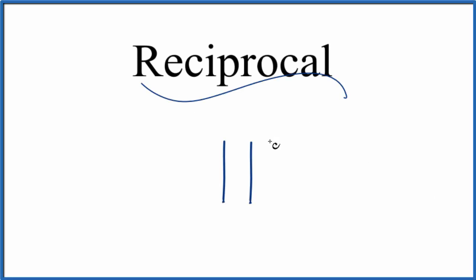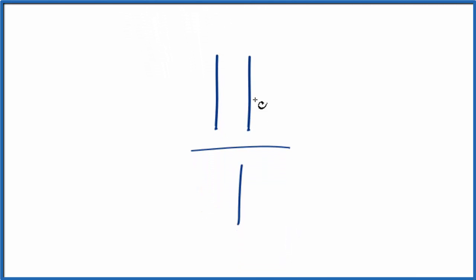If you need to find the reciprocal for 11, this is how you do it. To start off, we can think of 11 as 11 over 1. 11 divided by 1, that's still 11.